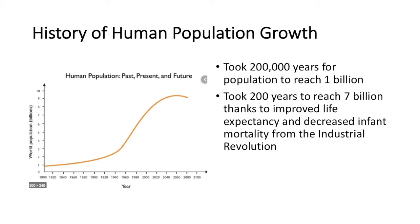We had increased our life expectancy, so people could then reproduce for longer because they live for longer. We also decreased infant mortality — the rate at which infants are not living past the age of 2. We can thank these improvements to the Industrial Revolution, where we were able to create more material and agricultural goods that could prolong our lifespan and decrease the death rate of young infants.